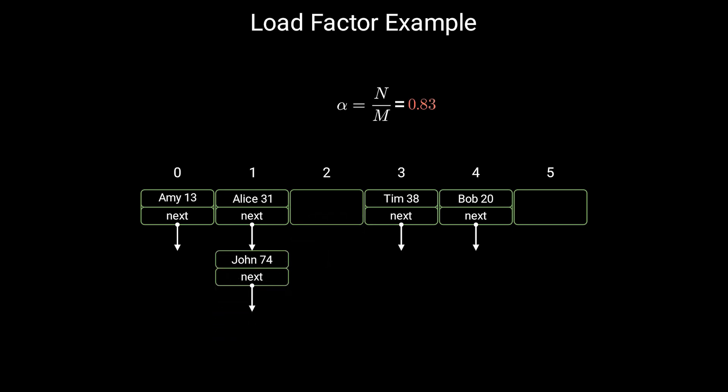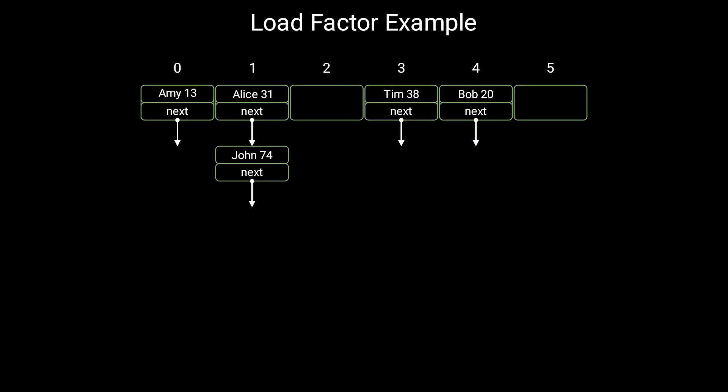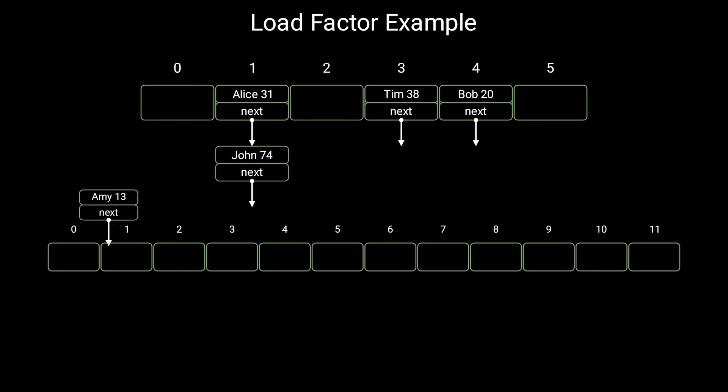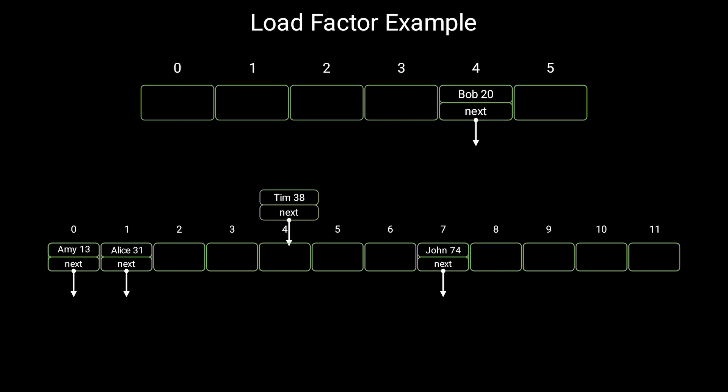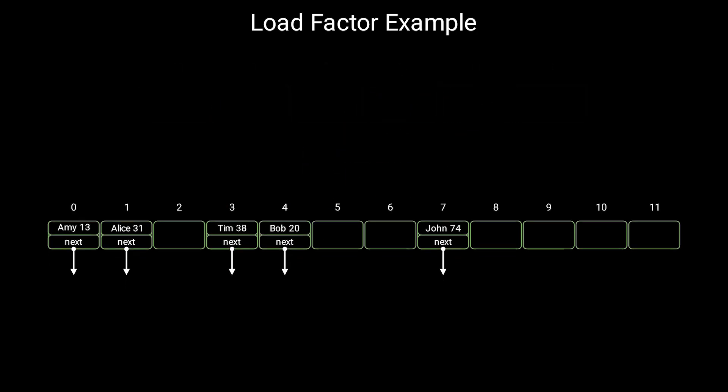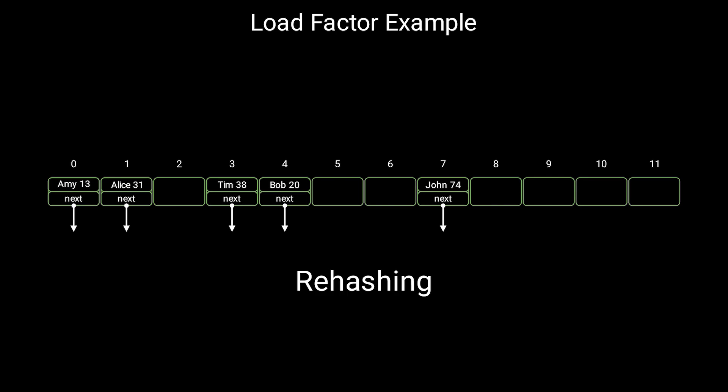If the load factor is too high, usually above 75%, it is a good idea to create a larger array to reduce the load factor. The new array is twice the size of the original array. To do that, we need to distribute the elements from the original array to the new one. And this process is called rehashing. Note that the elements are stored in different slots now because the array size has changed.